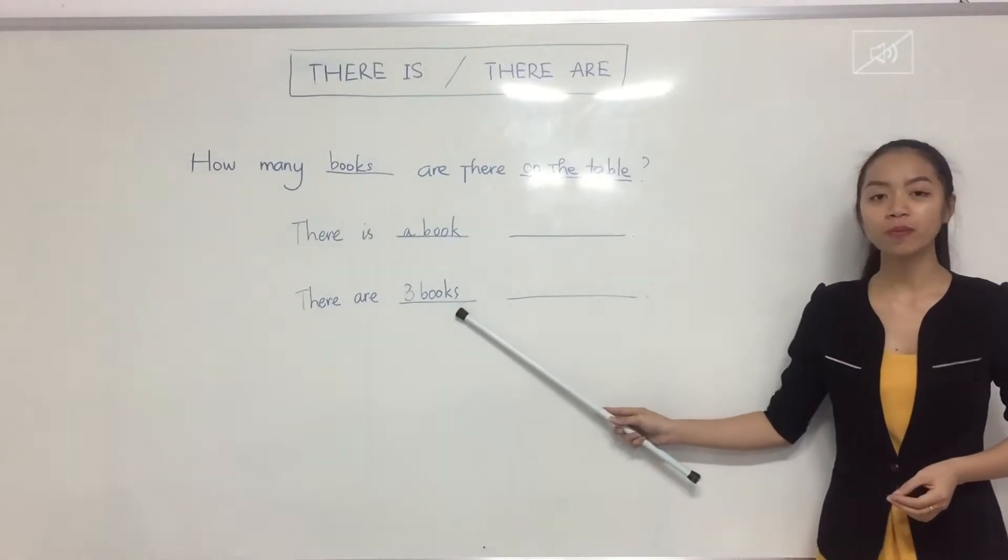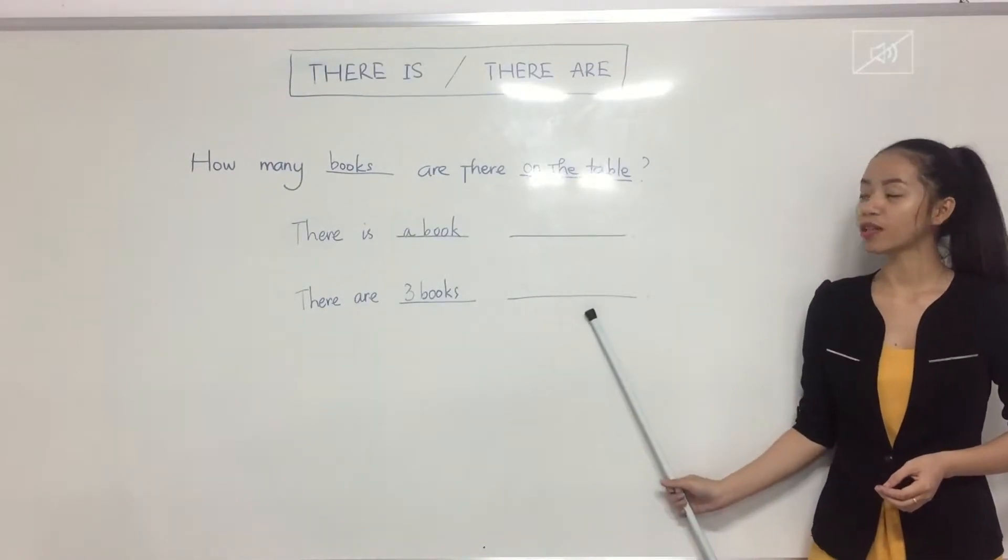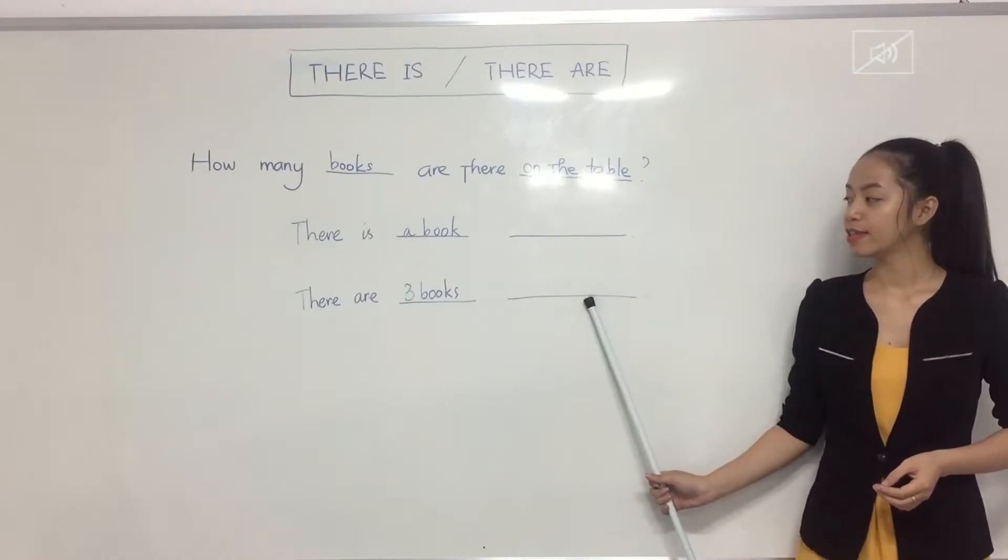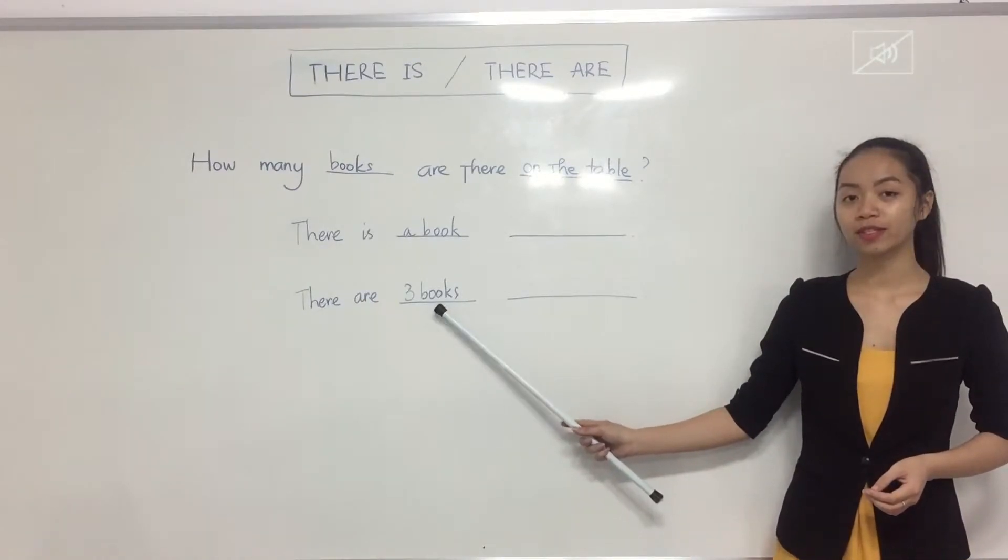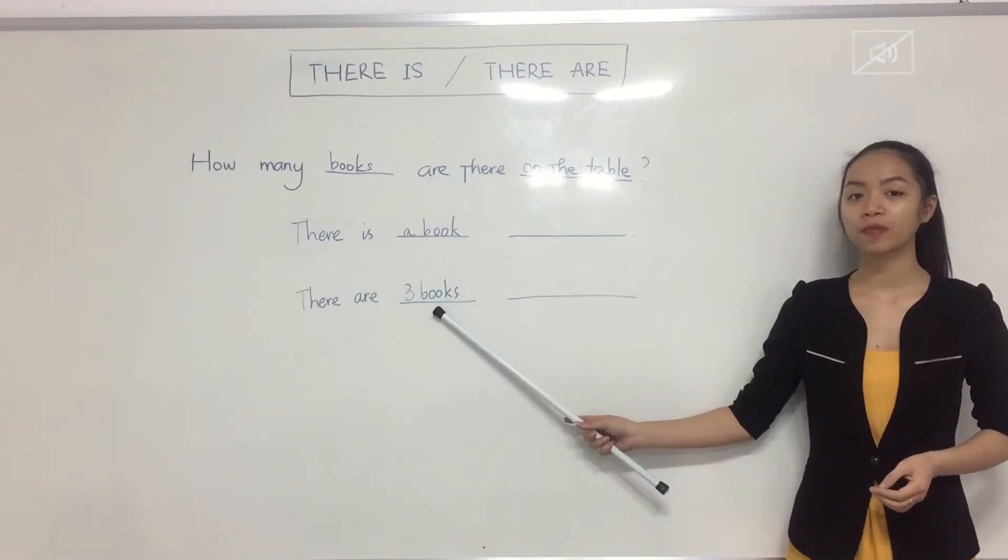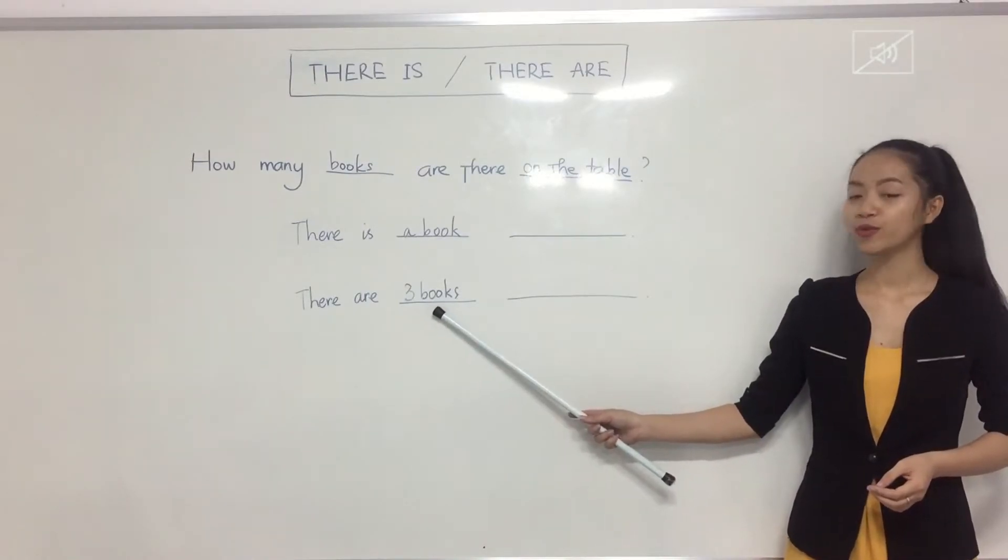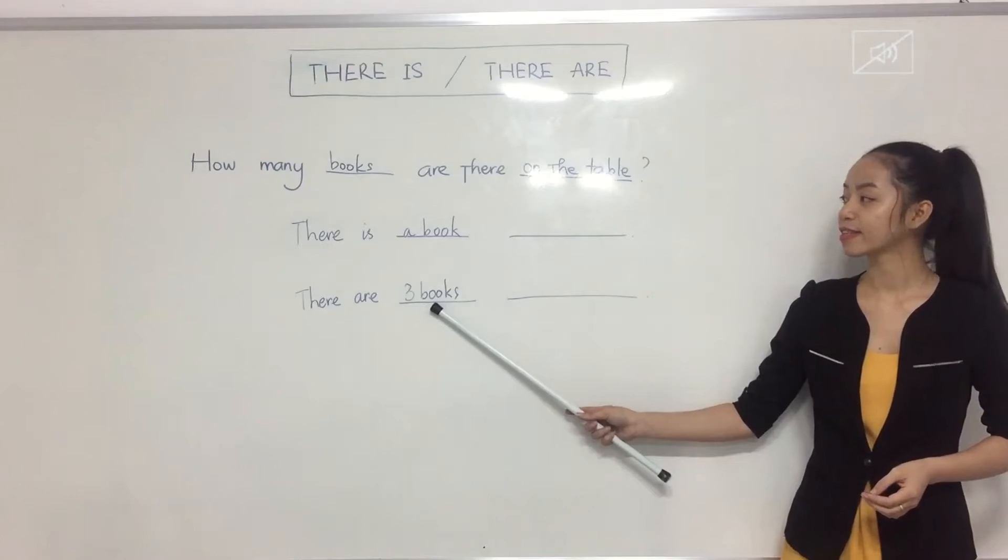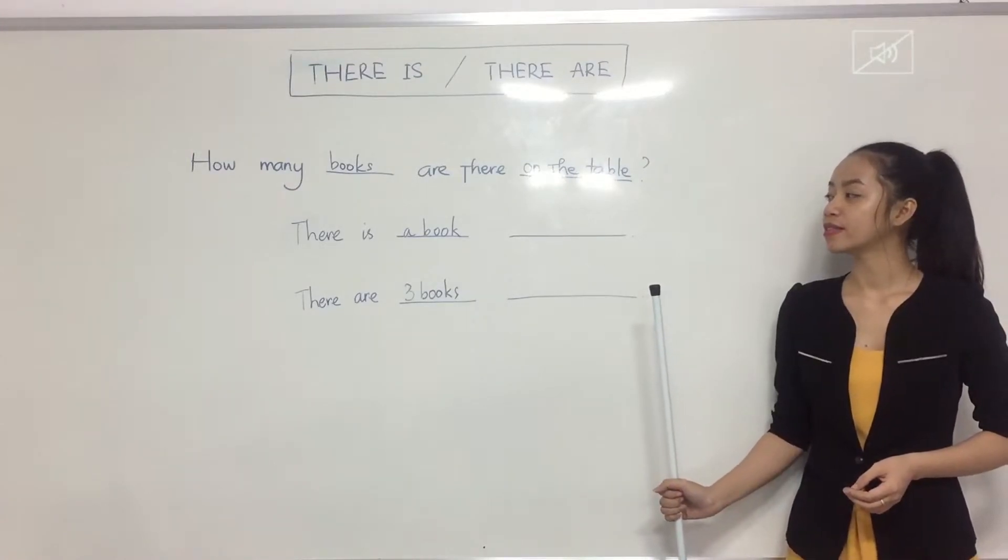There are three books. There are three books on the table. Three pencils. Three pens. Two notebooks. Two cats.